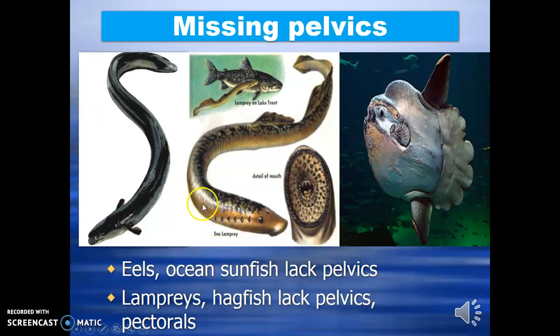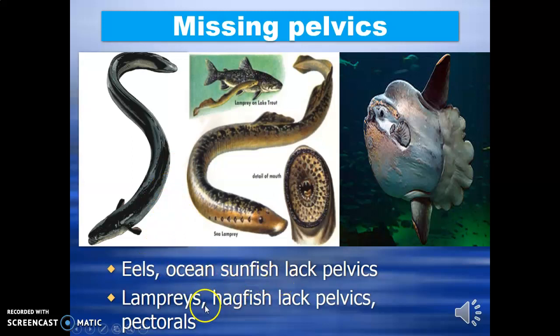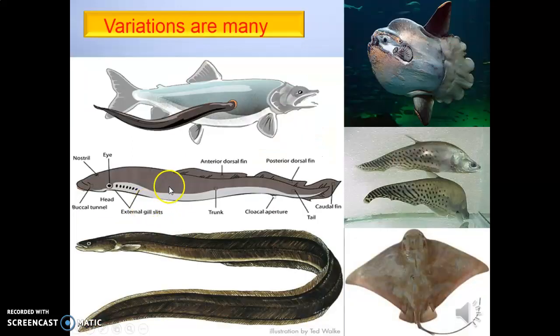Here you can see missing pelvics — in these cases you cannot see the pelvic fin. For example, eels and ocean sunfish lack pelvics. Similarly, lampreys and hagfish do not have pectoral fins.